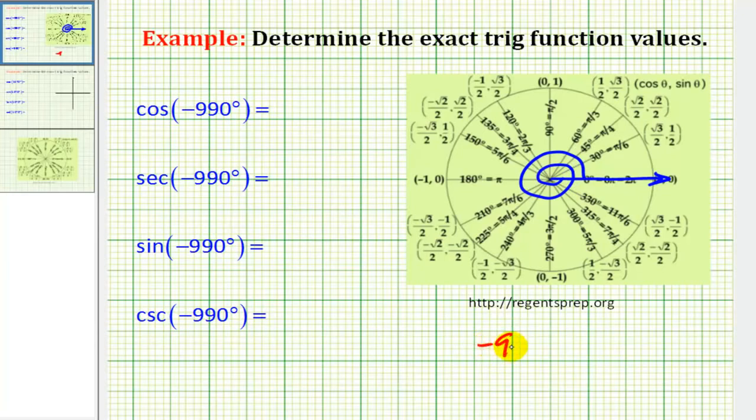And since 990 degrees is equal to negative 720 degrees plus negative 270 degrees, we need to rotate another 270 degrees clockwise. So if we do that, the terminal side of the angle is going to be along the positive y-axis here.